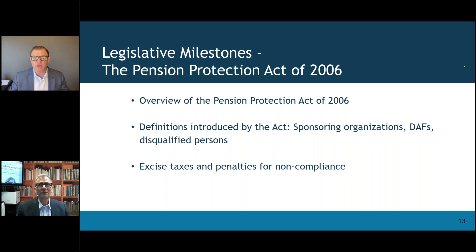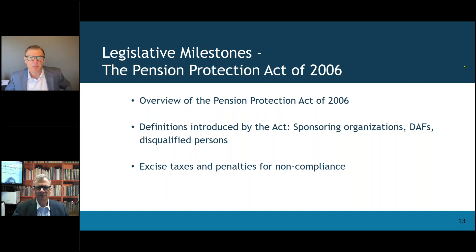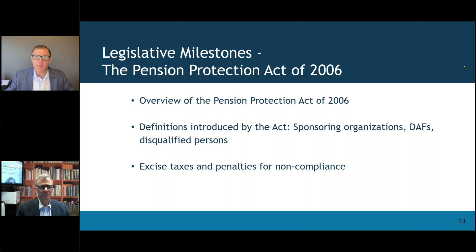The Pension Protection Act first made it really appealing for donors to donate S corporations — still a very difficult transaction potentially — but there were a number of things, though they were all temporary laws. And then finally by 2015, we got the PATH Act, signed by President Obama, which made a lot of those opportunities permanent law, like the qualified charitable distribution. So this was monumental for charitable planning.